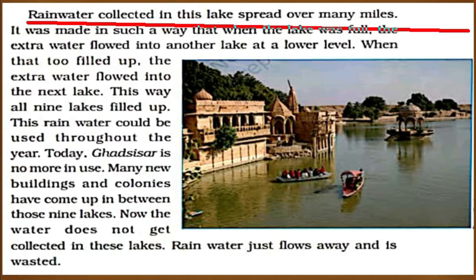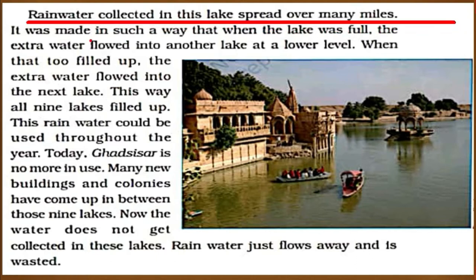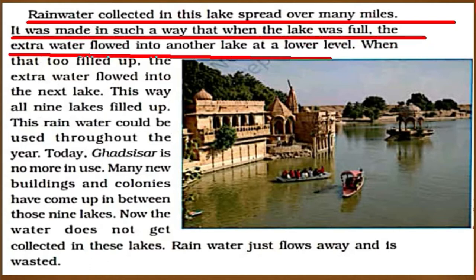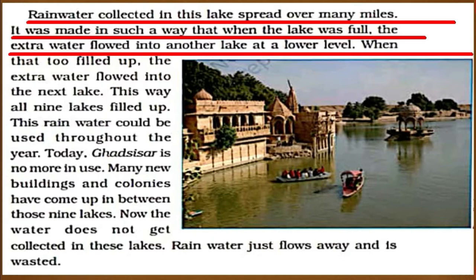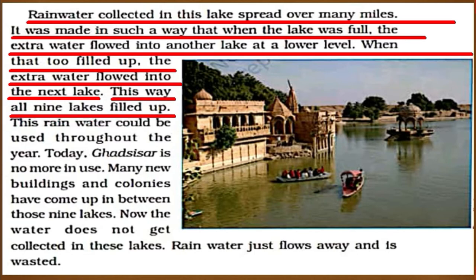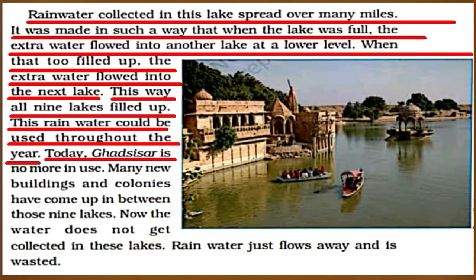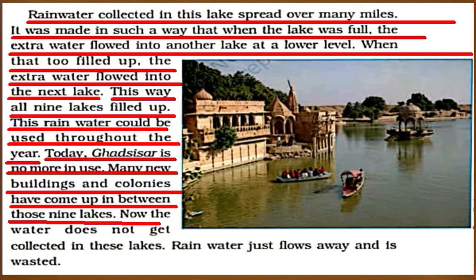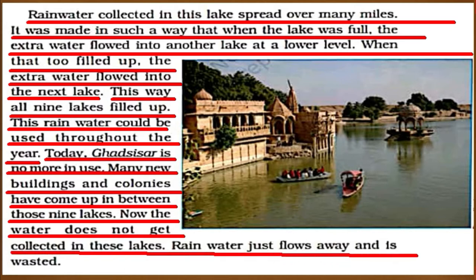Rain water collected in this lake spread over many miles. It was made in such a way that when the lake was full, the extra water flowed into another lake at a lower level. When that too filled up, the extra water flowed into the next lake. This way, all nine lakes filled up and this rain water could be used throughout the year. Today, Ghat Sisar is no more in use — many new buildings and colonies have come up between those nine lakes.